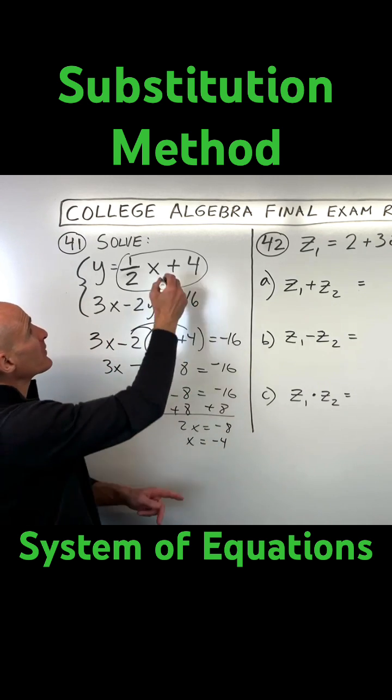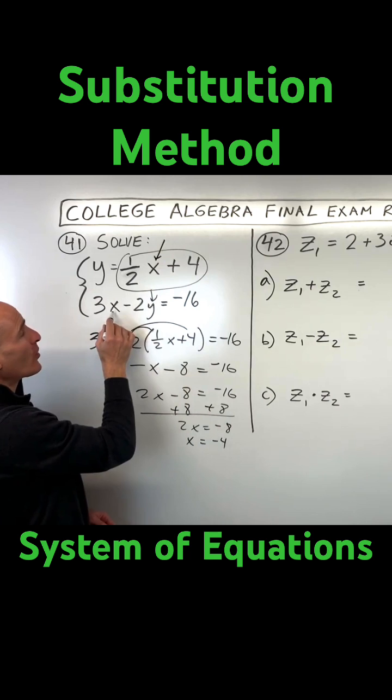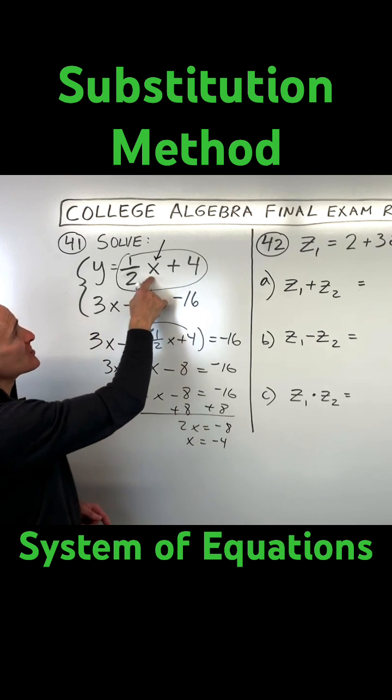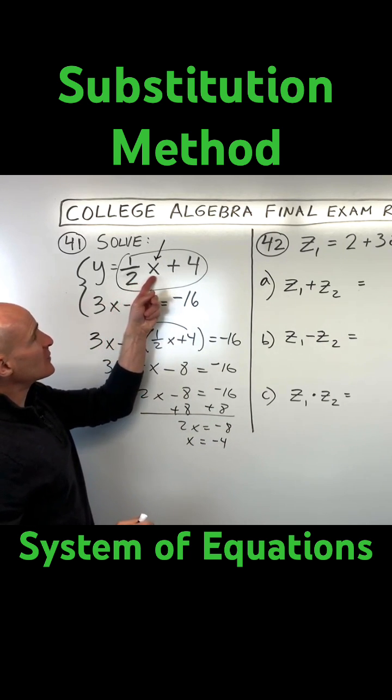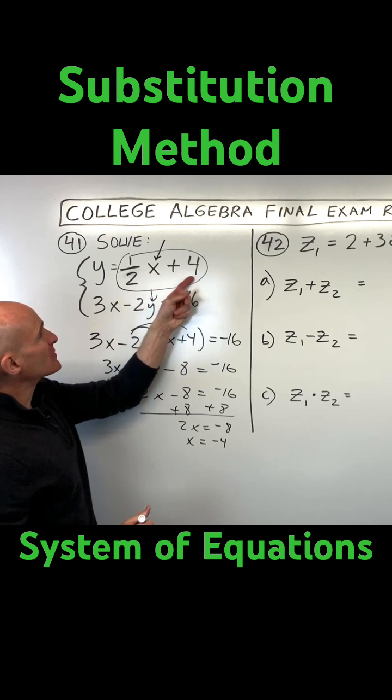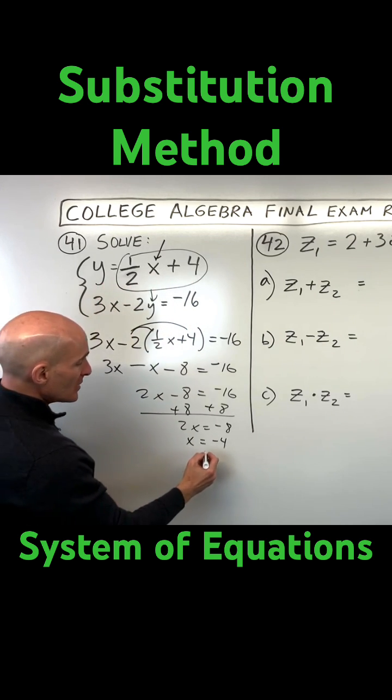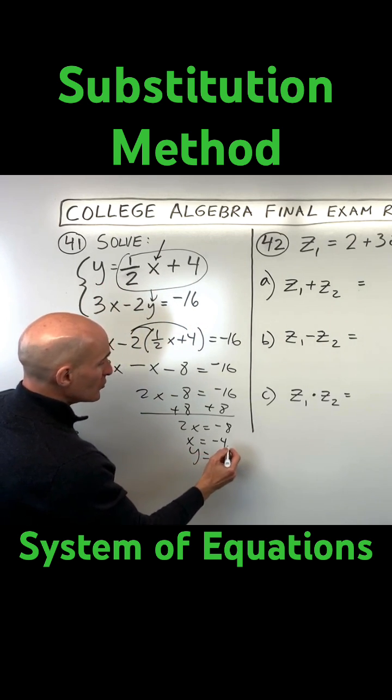Now if we take the negative 4, put it back in for x here or here, we can solve for y. Let's do the top one, that's a little bit easier. 1 half times negative 4 is negative 2, plus 4 is equal to 2. So now we know y equals 2. So when you write your final...